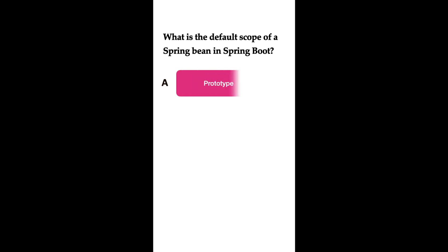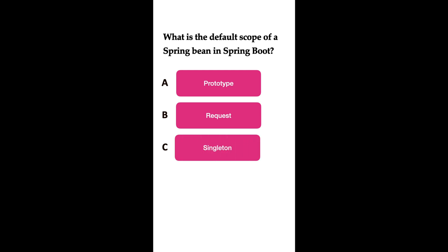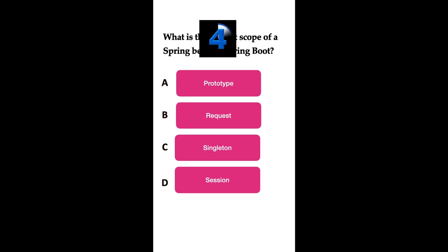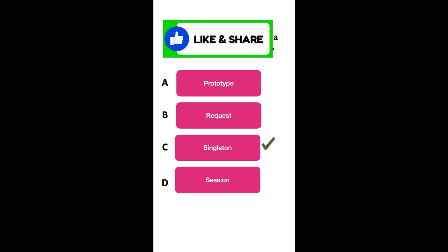What is the default scope of a Spring bean in Spring Boot? Option A: prototype. Option B: request. Option C: singleton. Option D: session. The correct answer is singleton. In Spring Boot or the Spring Framework, the default scope of a Spring bean is singleton, meaning only one instance of the bean is created and shared across the entire application.